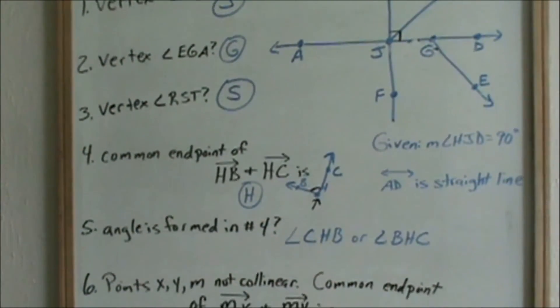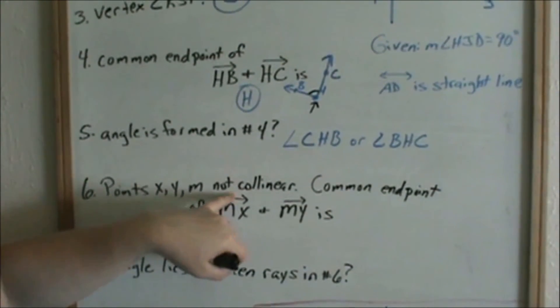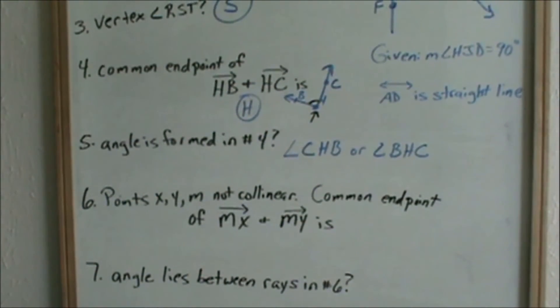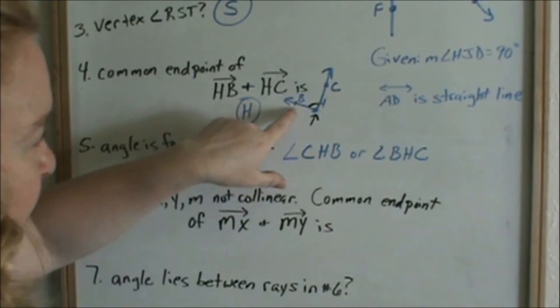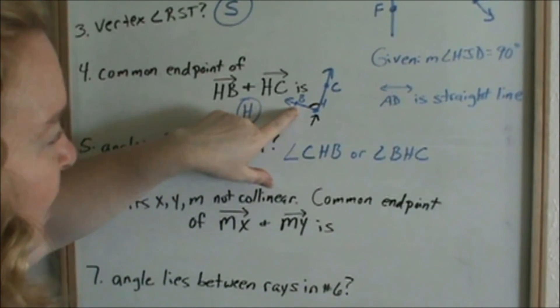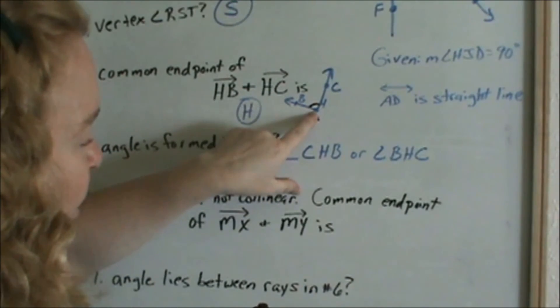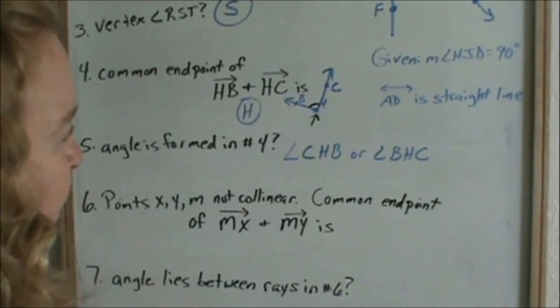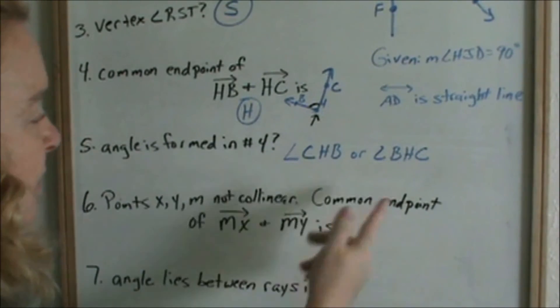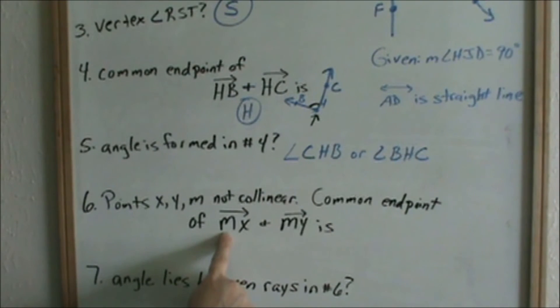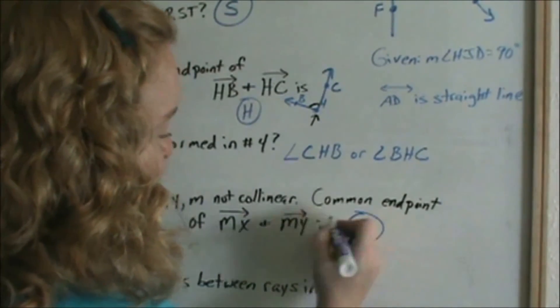Okay, looking at number 6. It says that points X, Y, and M are not collinear. This is not something that's in your figure. This is not something that they're going to give you a picture of. They're just telling you that points X, Y, and M are not collinear. If you look at angles, go back to this little picture of this angle of BHC. BHC, all three of them are not collinear together. B and H are collinear, and H and C are collinear, but all three together are not collinear. That's all they're telling you is that points X, Y, and M are not collinear. The common endpoint of ray MX and ray MY is what? Well, ray MX has an endpoint of M. Ray MY has an endpoint of M. So their common endpoint is M. They both have a common endpoint of M.